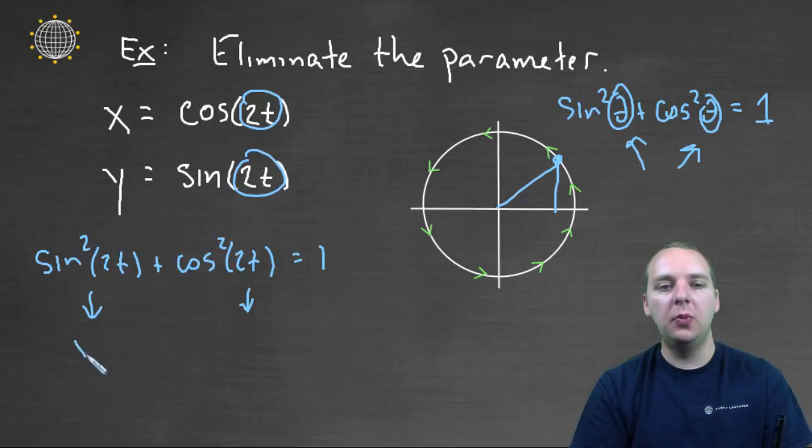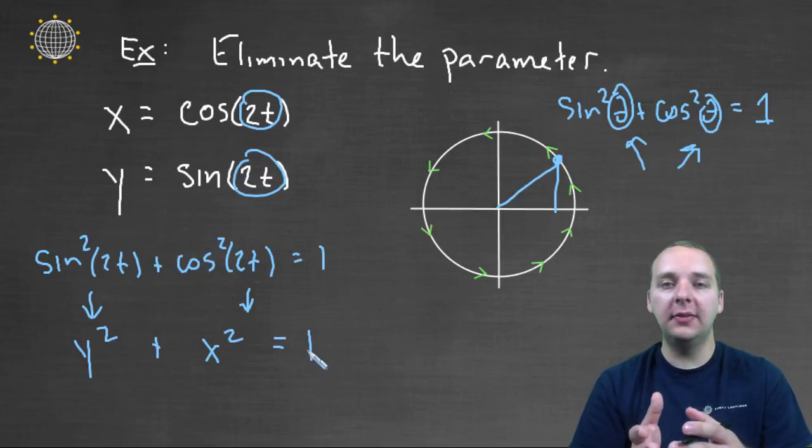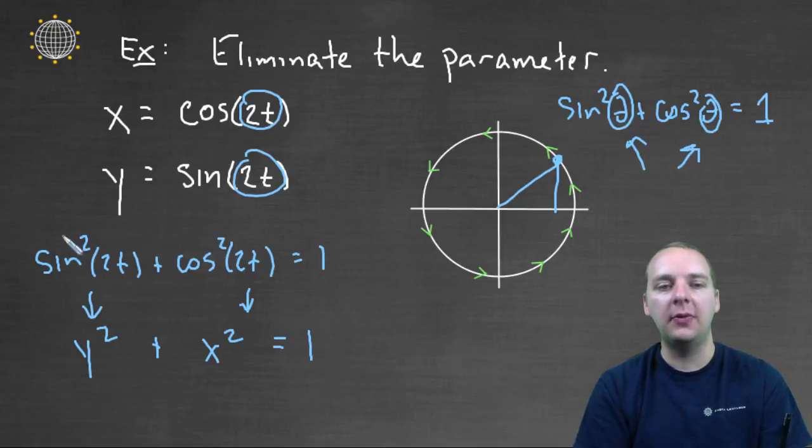So this would be Y squared plus X squared equals one. And I've suddenly got an equation that has X's and Y's in it, but doesn't have T's. And that's fantastic. That's exactly what I'm after.